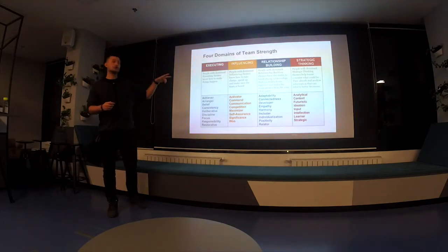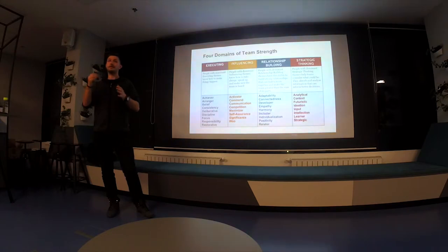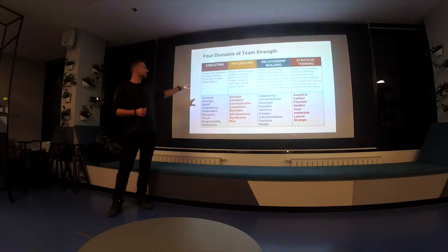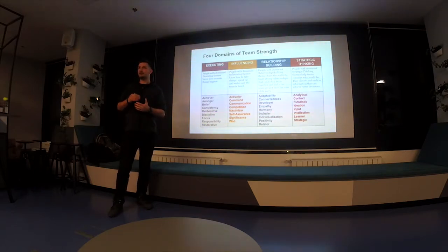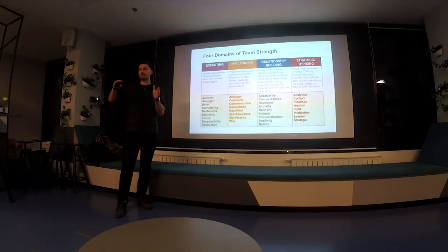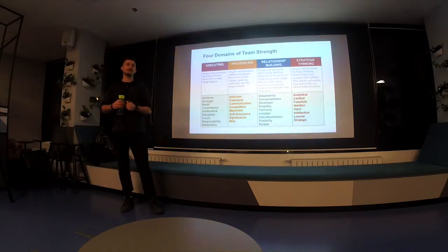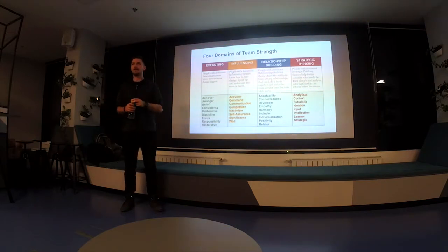They developed something called Gallup Strengths Finder. You get a survey, fill it out, and get five strengths — your strengths. Those five strengths can be in one of these categories: strategic thinking, relationship building, influencing, or executing. That started to open my eyes. If we have a person with four out of five talents in executing, that's his way of doing things. So if you want to pass any information to that person, you need to be aware that person is an executor. An executor needs very specific and straightforward tasks to know exactly what they're doing. However, this approach required sending a 100-question survey and waiting 30 to 40 minutes for results — not very practical.